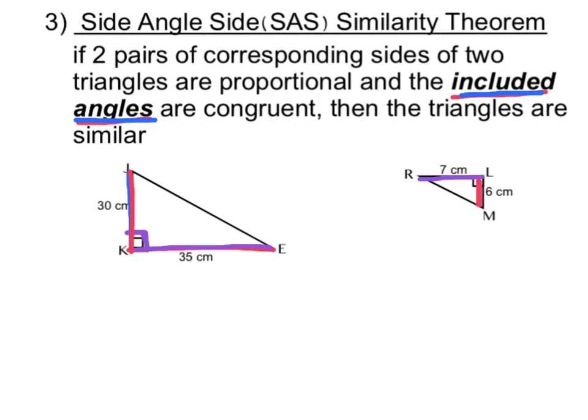The included angle means the angle that is included in between my two given sides. So that has to be this angle right here, and we notice that it has a right angle box. So the included angle is 90 degrees. On the small triangle, the included angle also has to be in between my two given sides, and that one also has a 90 degree angle box. So I know those included angles are both 90 degrees, and therefore they're congruent.